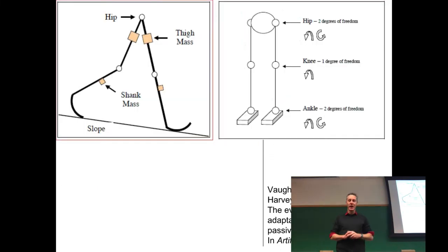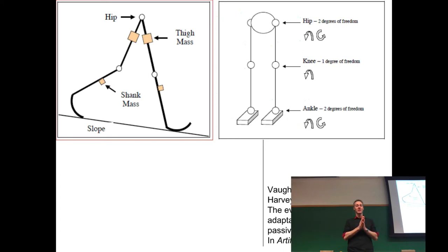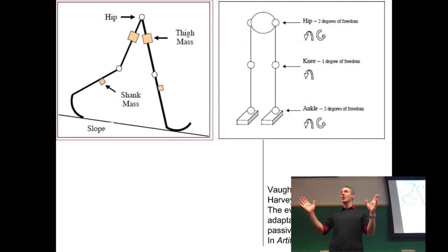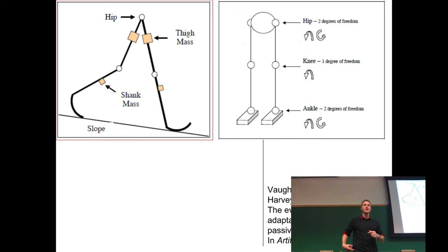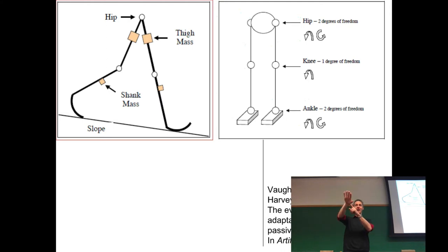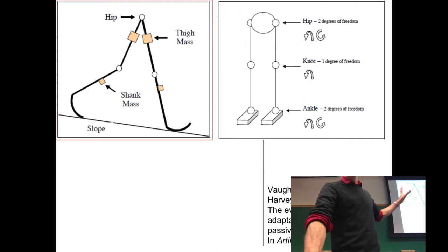The biped walker has two degrees of freedom at the hip — rotation forward/back and inward/outward — one degree of freedom at the knee, and the ankle can rotate forward/back and yaw about its long axis. That gives five degrees of freedom per leg, ten joints total. There are also twelve additional morphological parameters, most of which allow evolution to change the mass distribution, leg length, foot length, and mass placement.